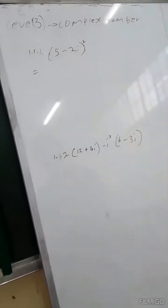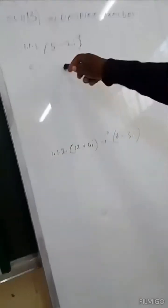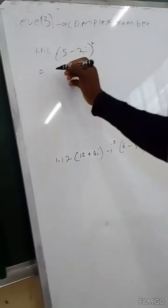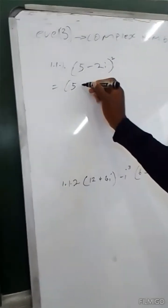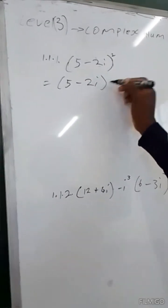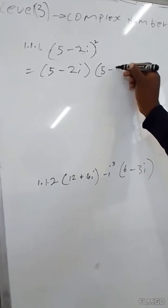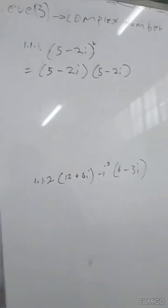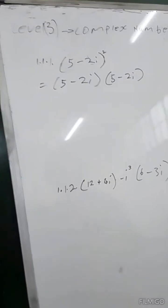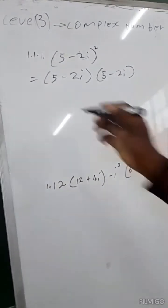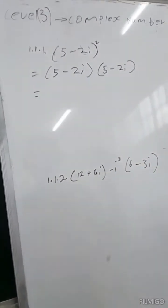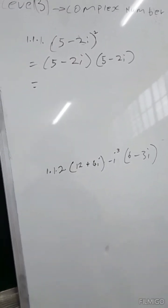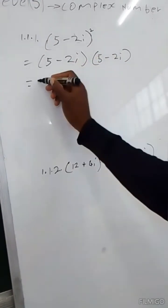Because of exponents, we are going to expand. We will do 5 times 5, which is 25.